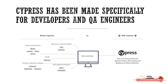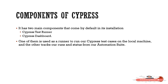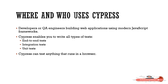Everything is inbuilt, which both developers and QA can utilize as an end-to-end testing framework. Cypress has two main components that come by default upon installation: the Cypress Test Runner and the Cypress Dashboard. The Test Runner is used to run Cypress test cases on your local machine, while the Dashboard tracks runs and the status of your automation suite. Cypress enables you to write all types of tests — end-to-end, integration, and unit test cases.